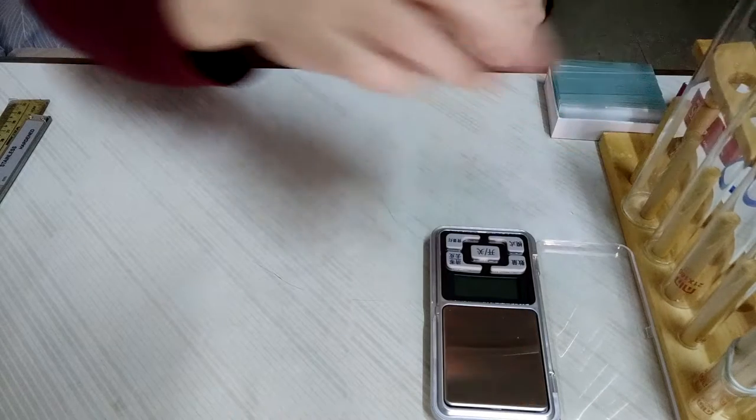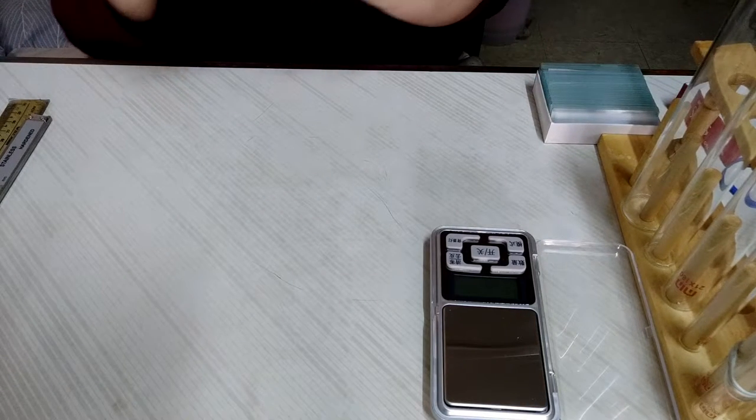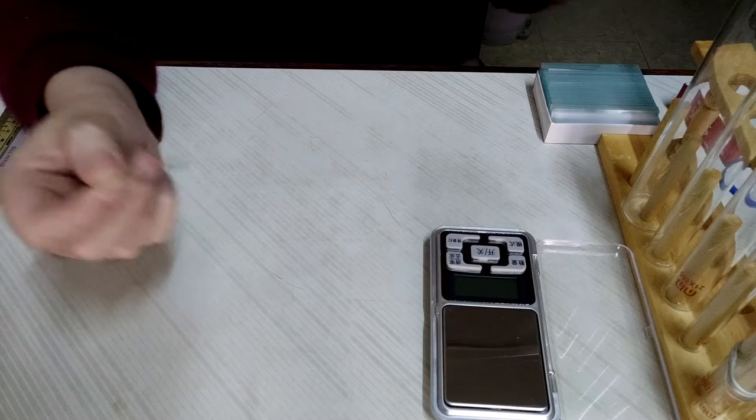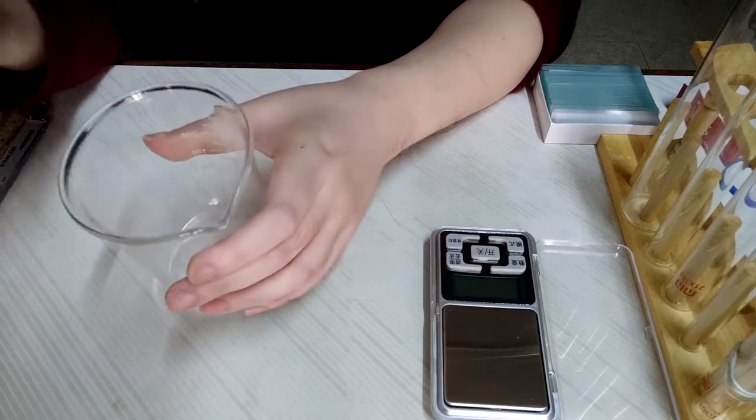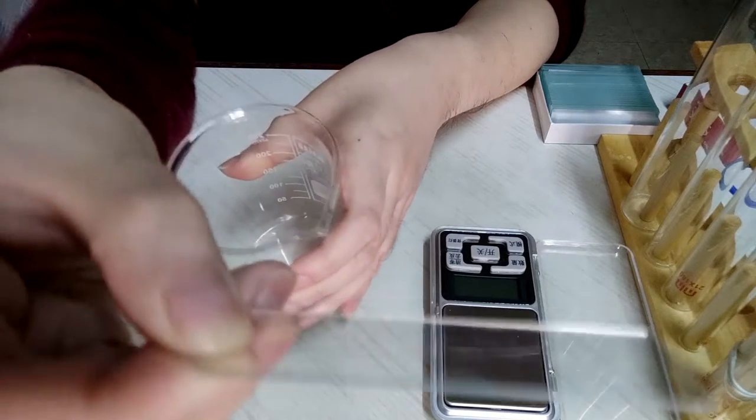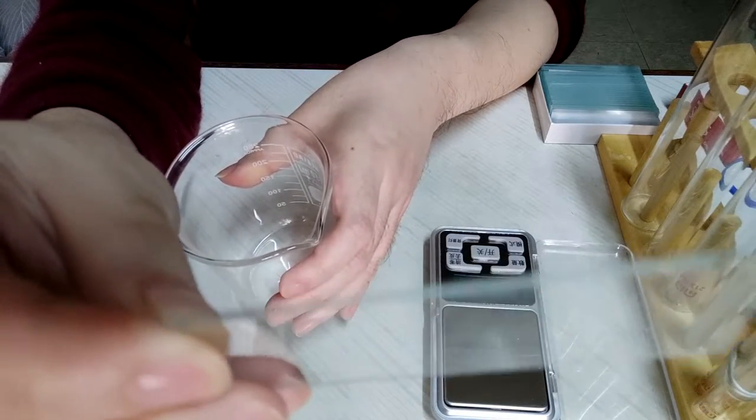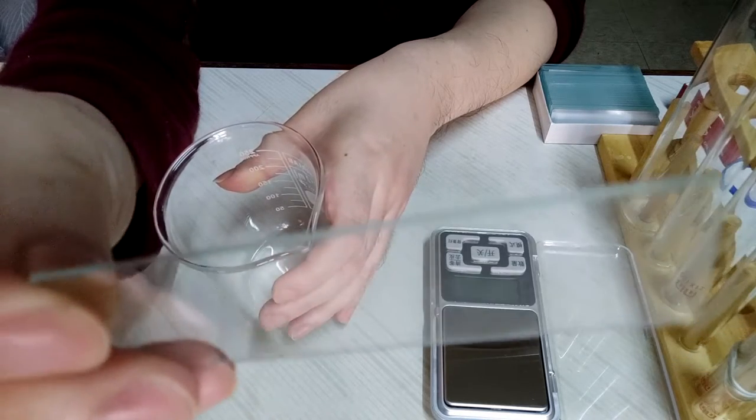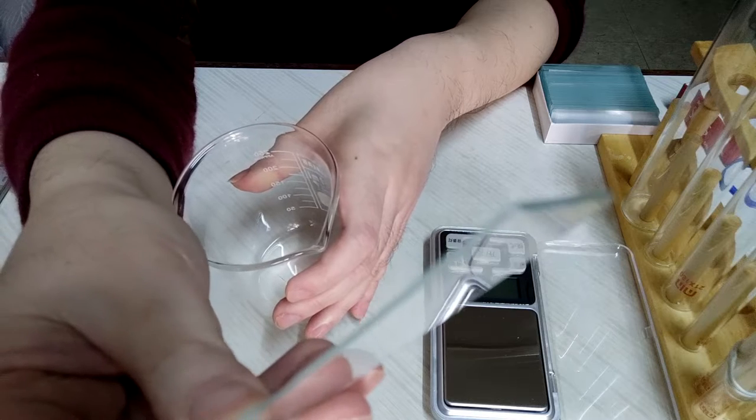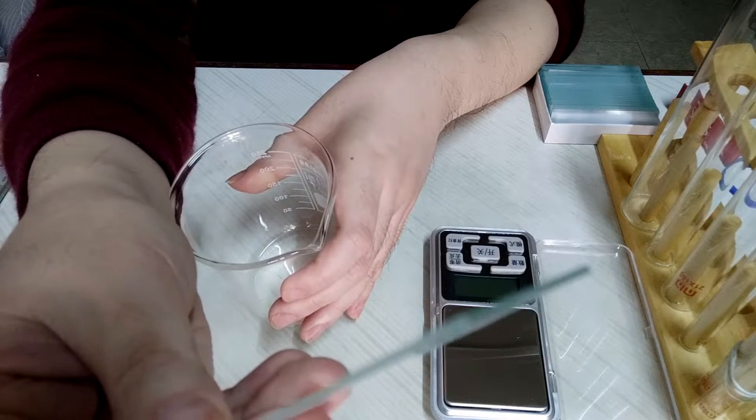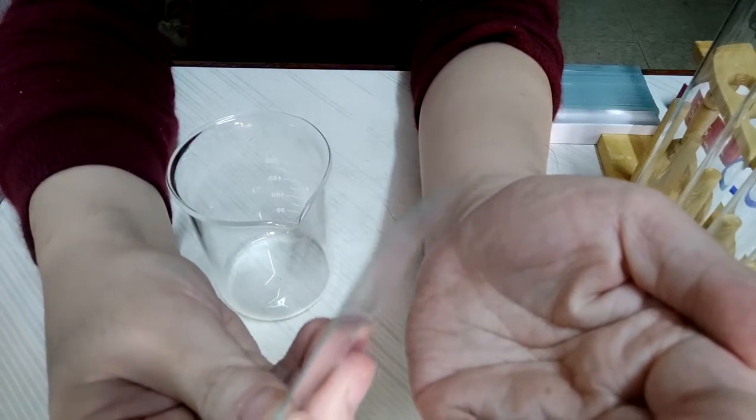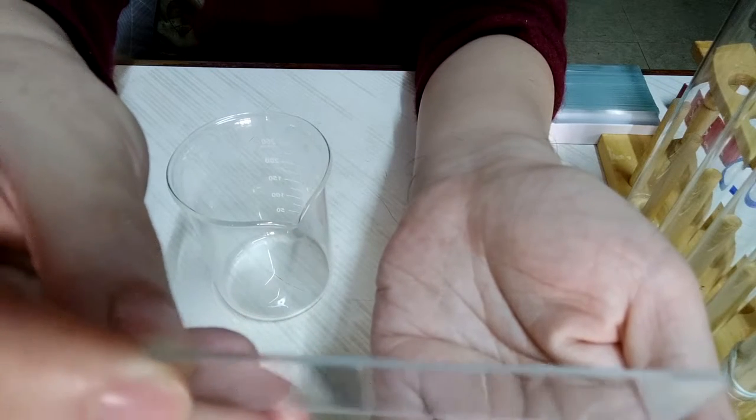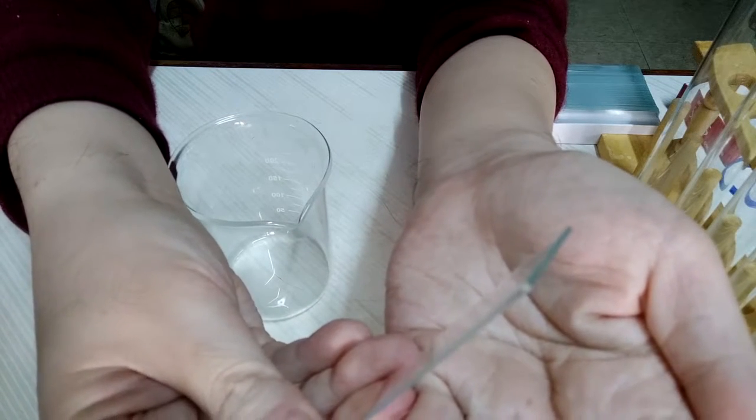But before we begin, I would like to bring your attention to the material of the glass. Some glasses, like this glass line, have a distinctive green or blue-green tint. When we look directly ahead, it seems transparent, but it is more noticeable there is a color on the side.